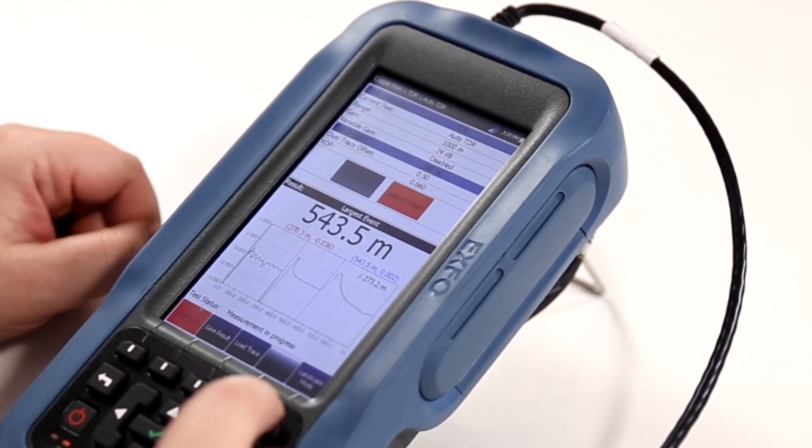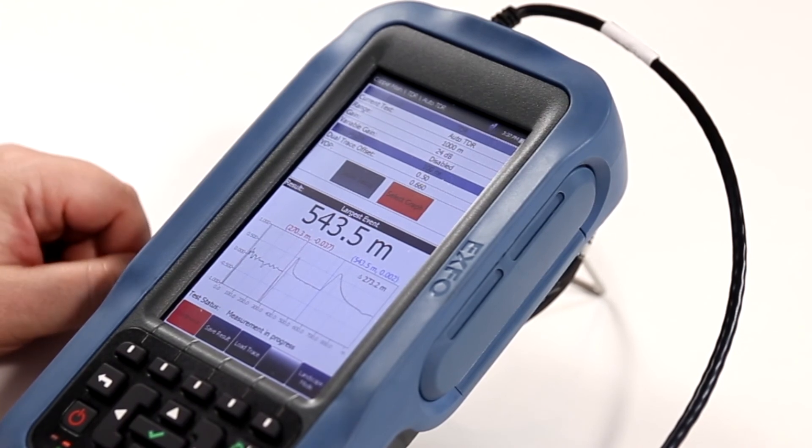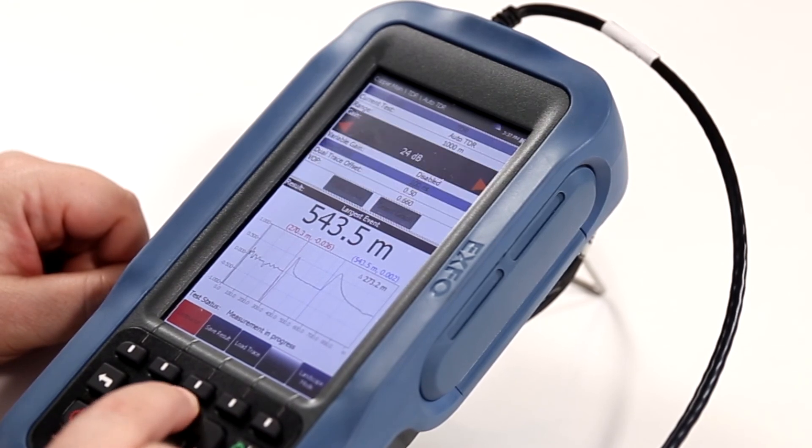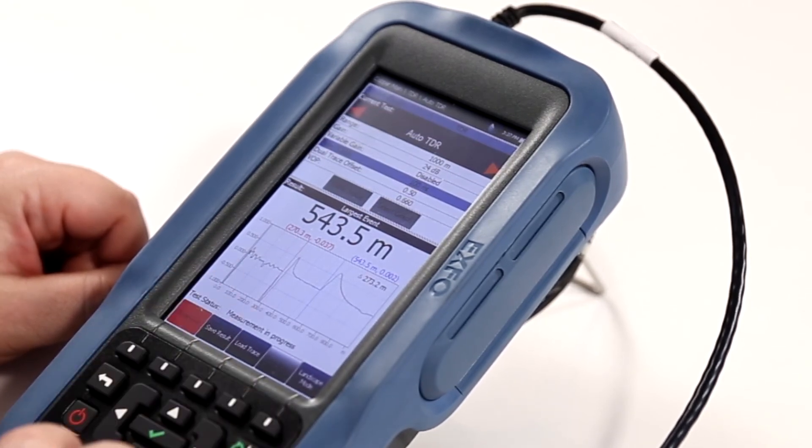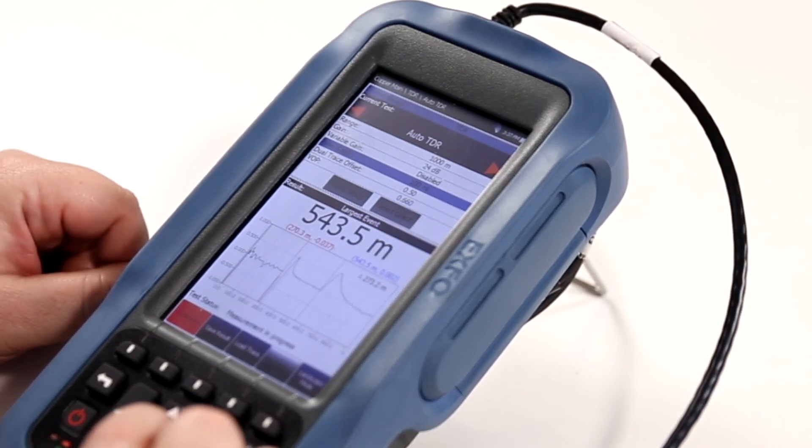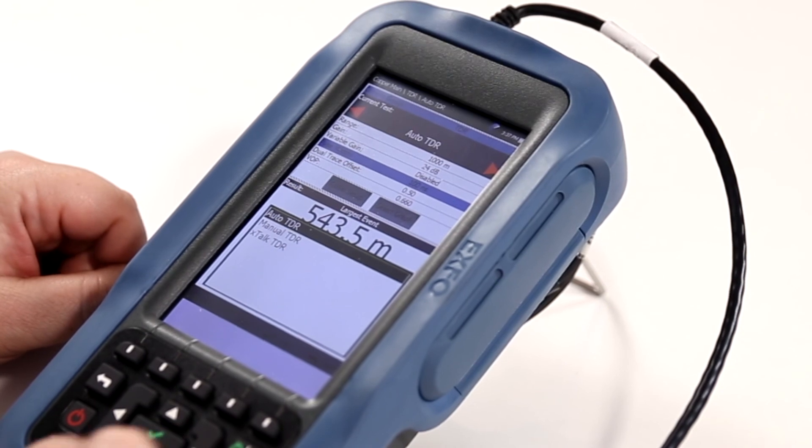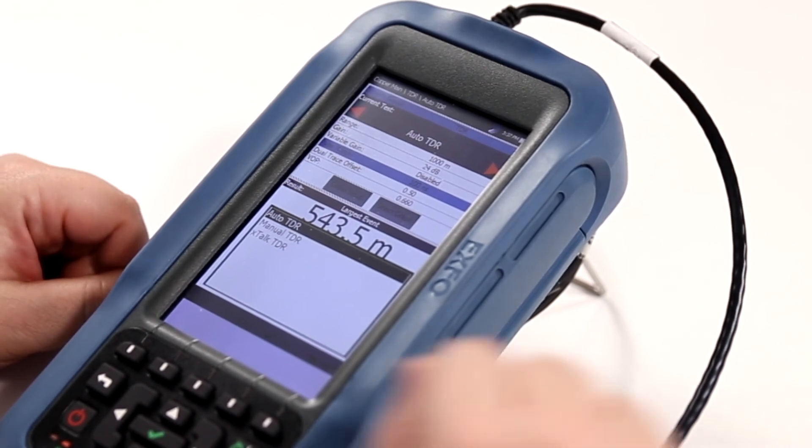Simply press the return to test to exit out of the graph mode and go back to the TDR test. If we want to migrate from an auto TDR to the manual TDR or the crosstalk TDR, we can press the check mark key and select the appropriate TDR that we wish to run.